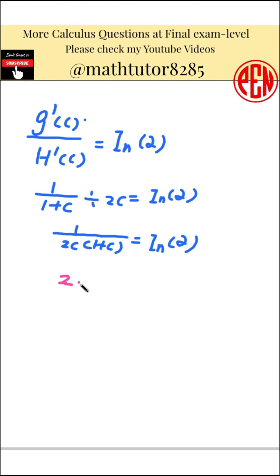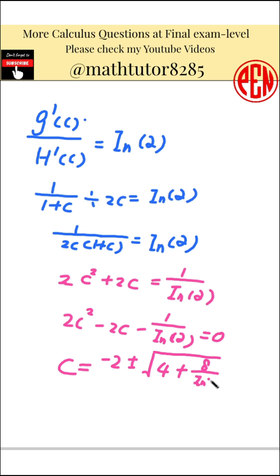Multiply both sides of the equation by 2 times x times 1 plus x and you get 1 equals 2 times x times 1 plus x, all multiplied by the natural logarithm of 2. This gives 2 times x squared plus 2 times x minus the reciprocal of natural logarithm of 2 equals 0. Apply the quadratic formula to solve for x. This gives x equals negative 2 plus or minus the square root of 4 plus 8 divided by natural logarithm of 2, all divided by 4.